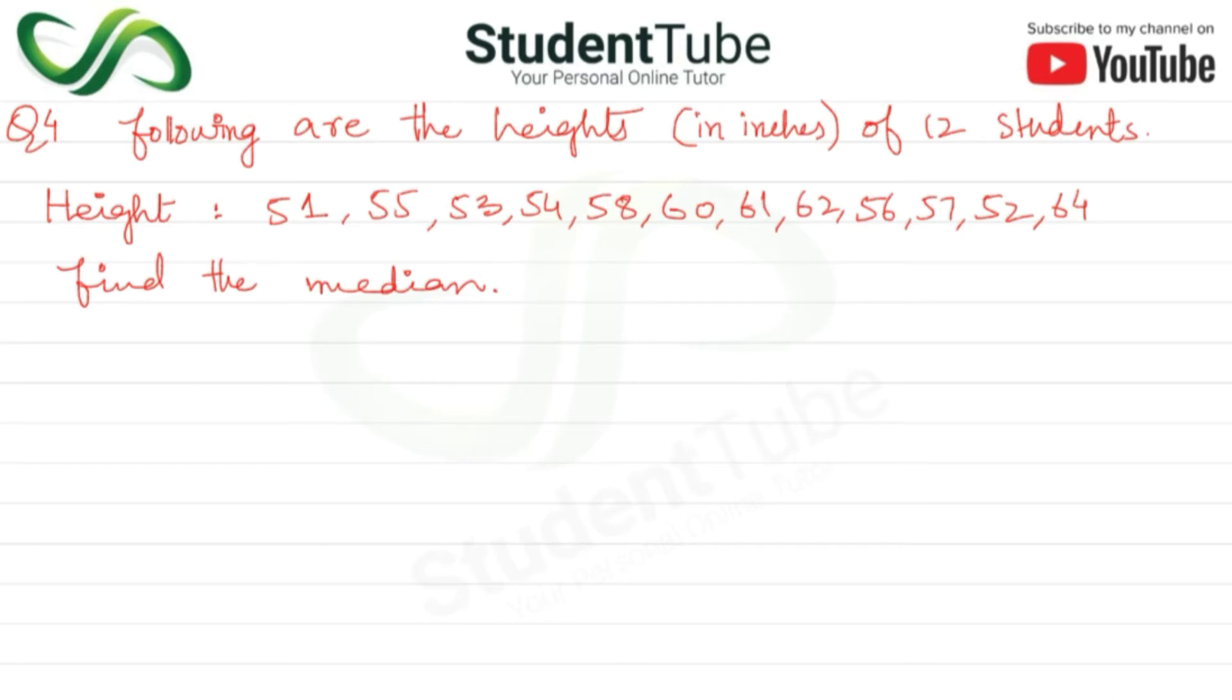Here the data is ungrouped data. For ungrouped data, the median equals 1/2 times [n/2th value plus (n+2)/2th value].